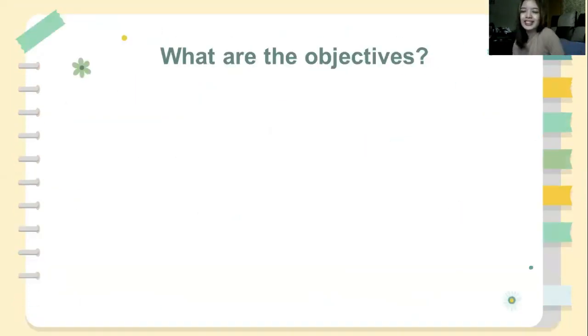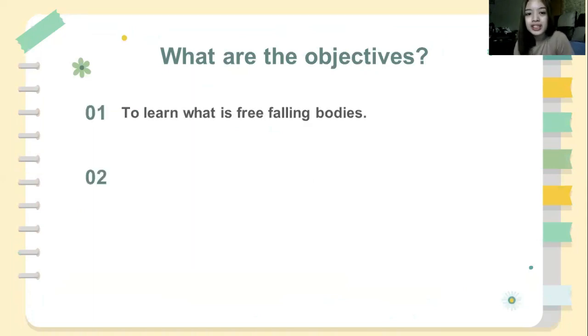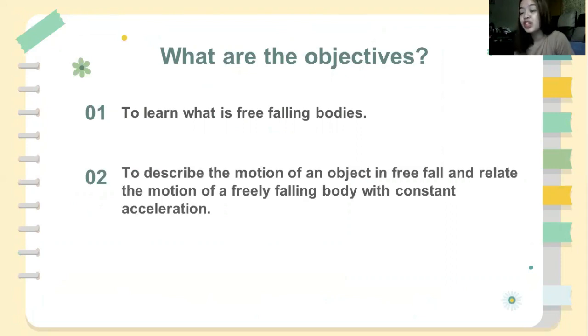So what are the objectives? For number one is to learn what is free falling bodies. For number two is to describe the motion of an object in free fall and relate the motion of a freely falling body with constant acceleration.